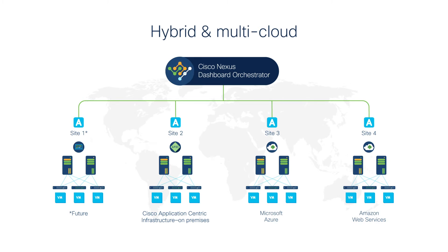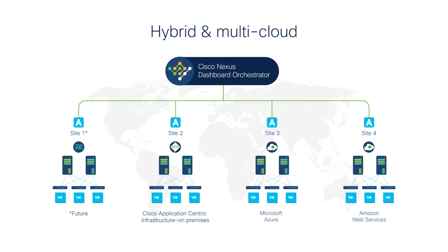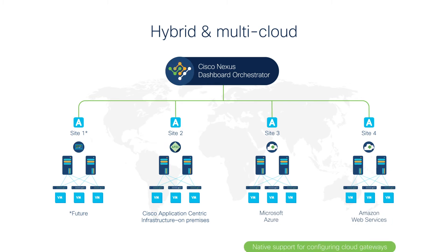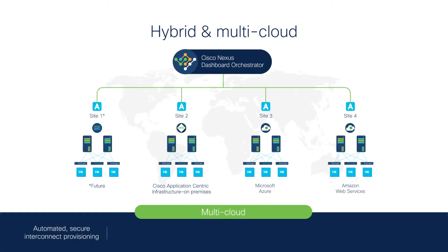Cisco Nexus Dashboard Orchestrator also shines in hybrid and multi-cloud environments, where so many of today's data center applications reside. With Cisco Nexus Dashboard Orchestrator, you can push the same policies to multiple data centers and public clouds anywhere in the world in a single step. For public cloud environments like AWS and Azure, Cisco Nexus Dashboard Orchestrator supports Cisco application-centric infrastructure policy extensions. A single policy model lets you normalize policy between both environments. Our latest 3.0 release offers native support for configuring cloud gateways like AWS Transit Gateway and Azure Virtual Network Peering. Now you can take charge of your multi-cloud world with automated, secure interconnect provisioning, consistent policy enforcement for on-premises and public cloud, and end-to-end visibility.